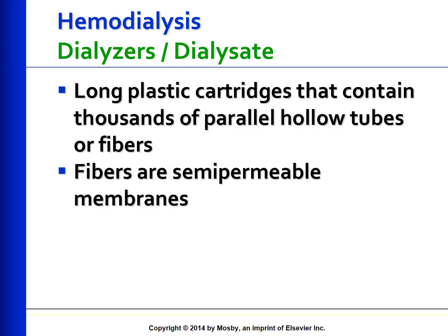The next component is the dialysate and the dialyzer. The hemodialysis dialyzer is a long plastic cartridge containing thousands of parallel hollow tubes or fibers. The fibers are semipermeable membranes made of cellulose or other synthetic materials. Blood is pumped into the top of the cartridge and dispersed into all of the fibers, while dialysate is pumped into the bottom and bathes the outside of the fibers. Ultrafiltration, diffusion, and osmosis occur across the pores of the semipermeable membrane, and the dialyzed blood converges into a single tube that returns to the patient.